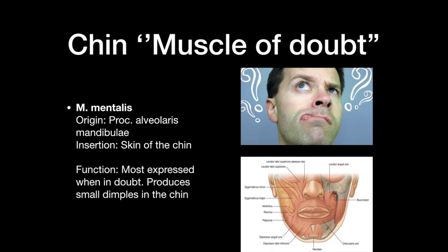The next and last muscle around the mouth is the chin muscle, or muscle of doubt — musculus mentalis. It originates from the processus alveolaris mandibulae and inserts at the skin of the chin. Its function is mostly expressed when in doubt: it produces small dimples in the chin, which you've probably noticed on your own chin.